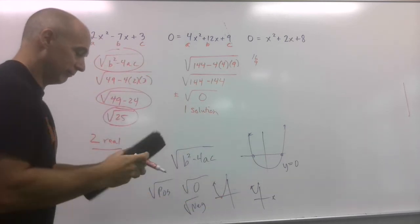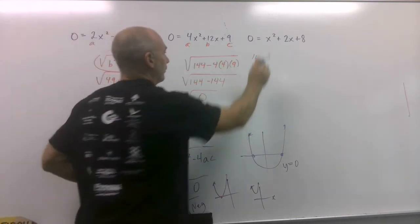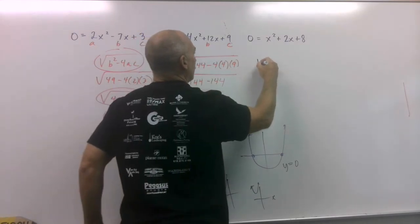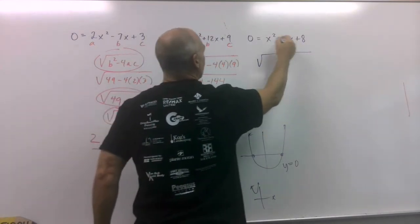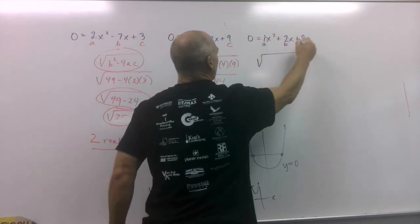Last one. Can you guess what's going to happen on this one? So, clear that. Here comes the discriminant. So, negative b. Remember, my a is a 1. It's hidden. b is 2, c is 8. Negative b, plus or minus.